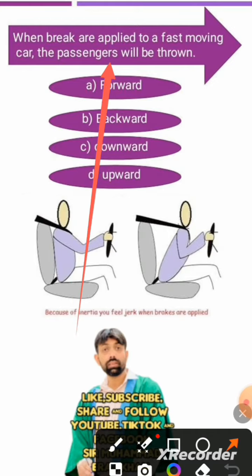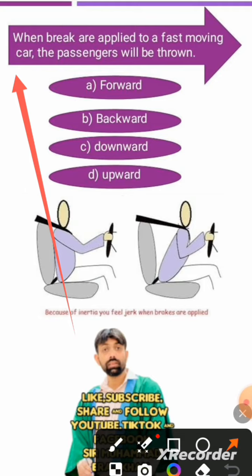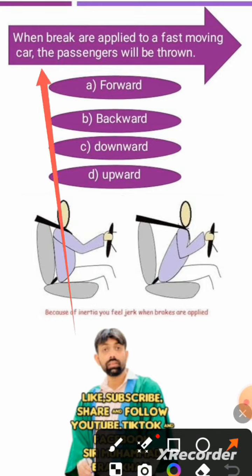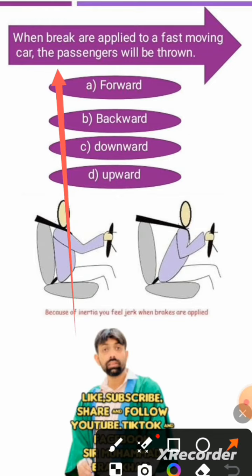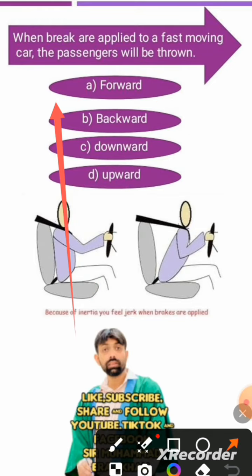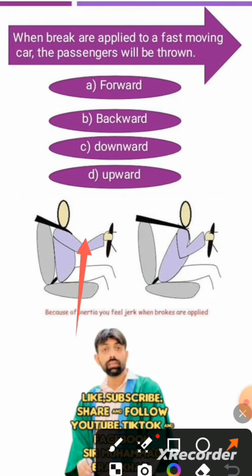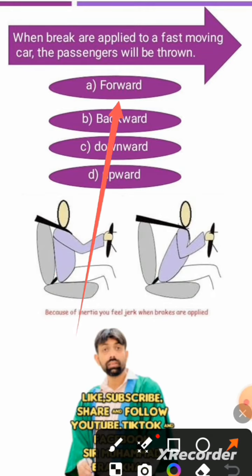When brakes are applied to a fast-moving car, the passenger will be thrown. In which direction will the passenger move? Forward, backward, downward, or upward?